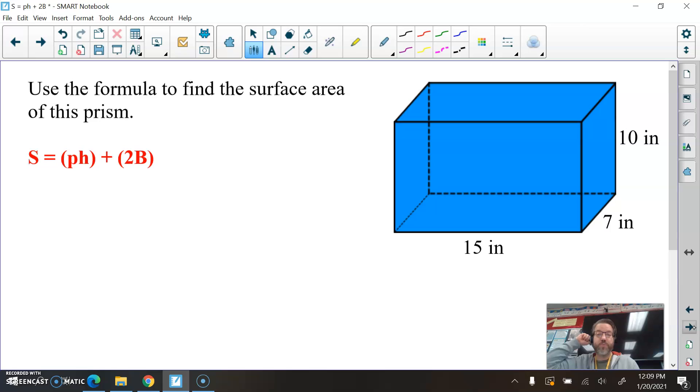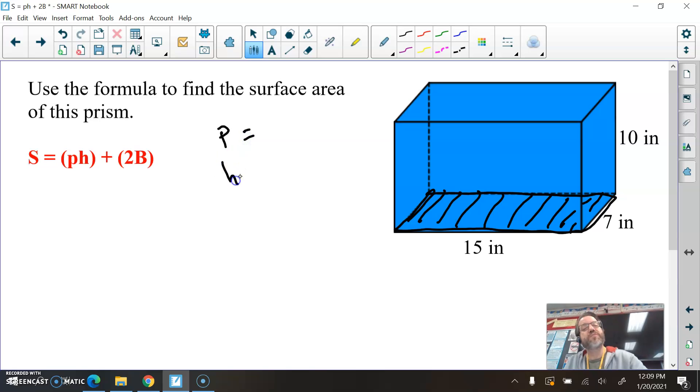So let's try this rectangular prism here. And what's nice is we already did this rectangular prism by going top and bottom, front and back, left and right, and combining them. But this time we're going to use the formula. Since it's a rectangular prism, all of the faces are rectangles. So if you want to call the bottom your base, you can do that. So let's call the bottom the base here. And I'll shade that in. We'll call the bottom the base. So let's find our P, our H, and our big B.